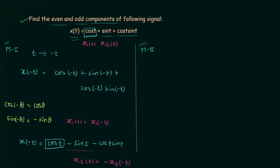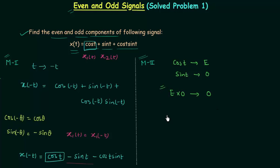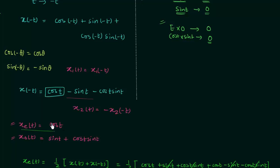Now for method 2, the shortcut for competitive exams, we use the properties of even and odd signals. We know cos(t) is an even signal and sin(t) is an odd signal. When we multiply an even signal by an odd signal, the result is an odd signal. So cos(t) is the even component, and cos(t)·sin(t) — an even times odd product — is odd. Therefore the even component is cos(t) and the odd component contains sin(t) + cos(t)sin(t).